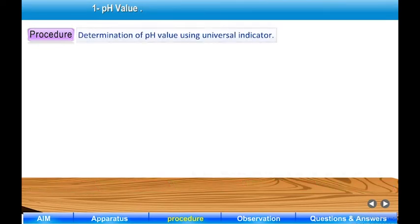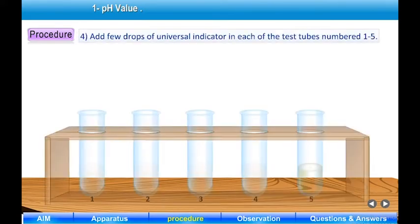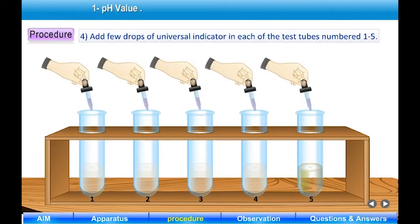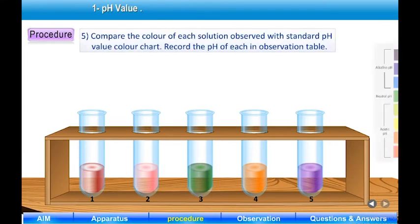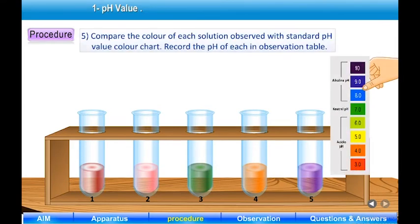Step 3 — Observe the color of the spot on the pH paper strip and compare it with the standard pH value color chart. Step 4 — For determination of pH using universal indicator: add a few drops of universal indicator in each of the test tubes numbered 1 to 5. Step 5 — Compare the color of each solution with the standard pH value color chart and record the pH of each in the observation table.